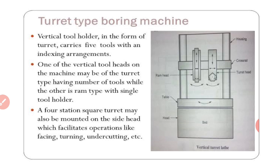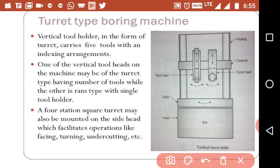The vertical boring machine we discussed was a standard vertical boring machine. Next is turret type boring machine. The diagram of turret type boring machine is shown in this slide, and it resembles a turret lathe. In this machine, an indexable turret is mounted on the cross rail above the table for multiple tooling. For example, if the turret is pentagon shaped, five tools can be held at once. A four-station square turret side head, which enables facing, turning, undercutting, and many other operations, is mounted at the side of the lathe.